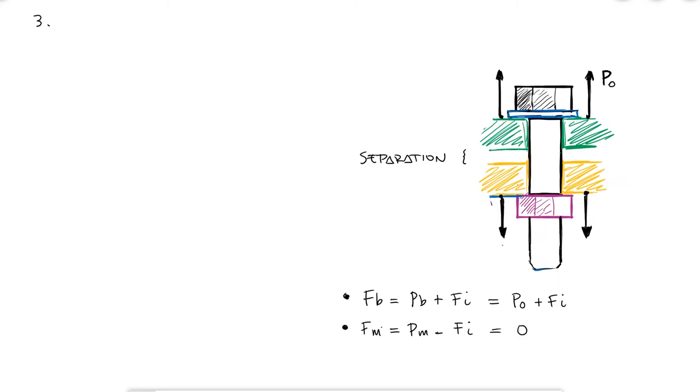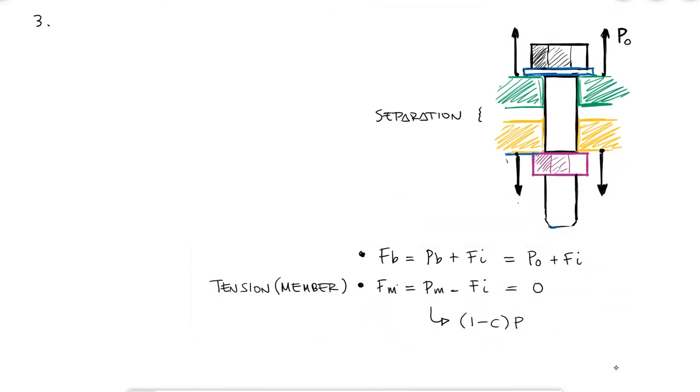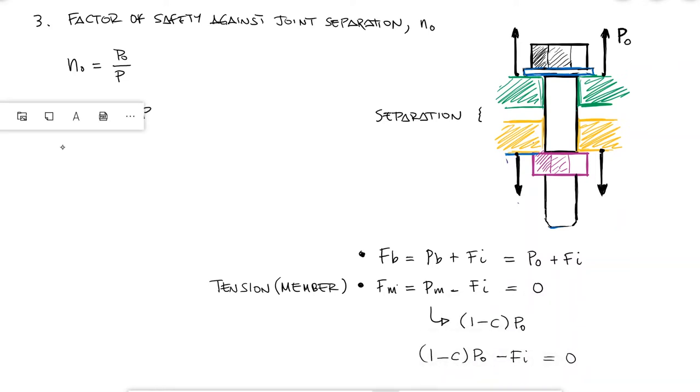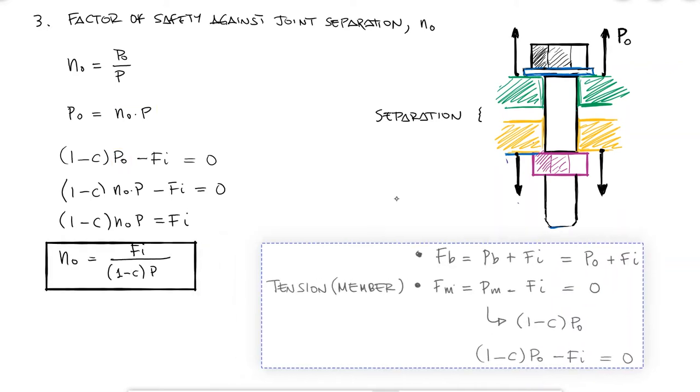With Fm equal to 0, and recalling from the member stiffness video that Fm, the tension inside the member, is the result of Pm, the fraction of the external load that goes into the members, minus the preload, we can say that 1 minus C times P0 minus Fi is 0. The factor of safety against joint separation, N0, would be P0 over P, which means P0 is N0 times P, and by substituting in the expression on the bottom right, N0 would be equal to the preload over 1 minus C times P.